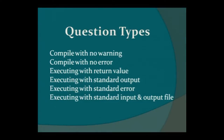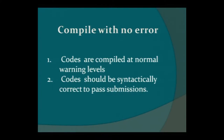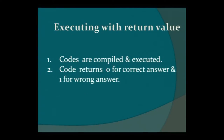The first type is compile with no warning — in such questions we test whether you know how to declare different types of data types. The code is compiled on a very high warning level, so your syntax has to be perfectly correct to get full marks; otherwise your score will be zero. The next type is compile with no error — these questions are compiled without high-level warning, so warnings are allowed and you will still get the correct score. The next type is executing with return value — here the teacher gives the student a piece of code to write, and checks whether the answer is correct by the return value: zero for correct, one for wrong.